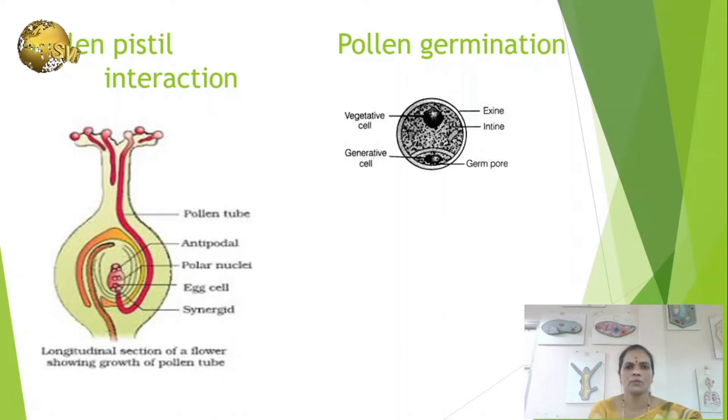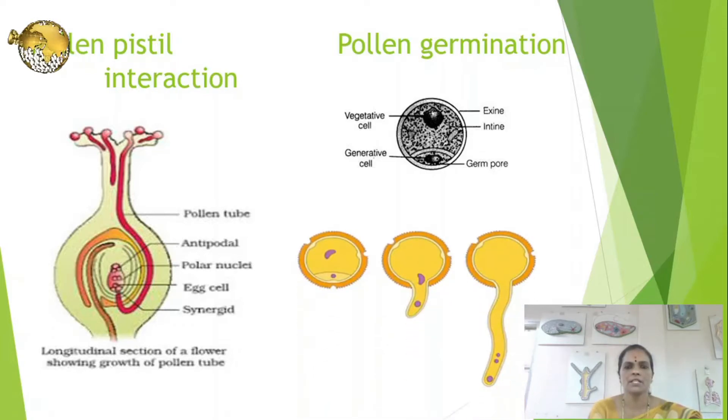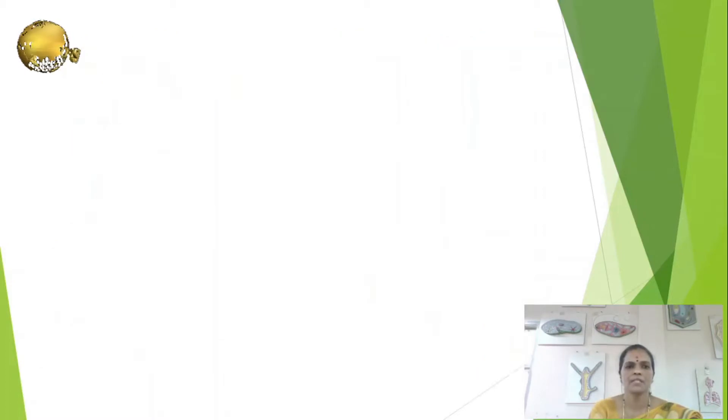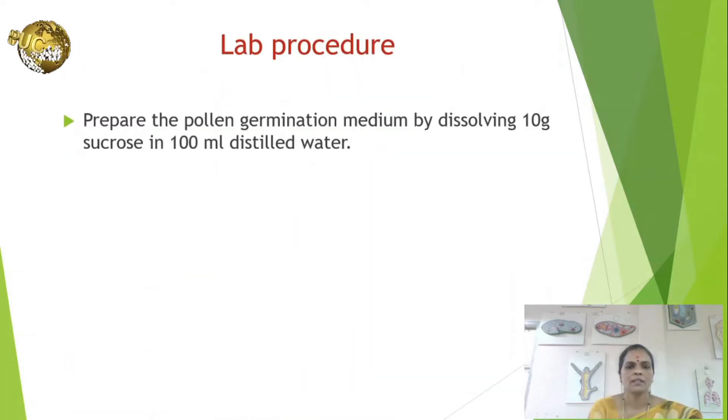The pollen grain consists of two cells: generative cell and vegetative cell or pollen tube cell. Upon germination, the vegetative cell gives rise to pollen tube through one of the germ pores, and the generative cell migrates into the pollen tube and starts dividing to form two male gametes or sperm cells.